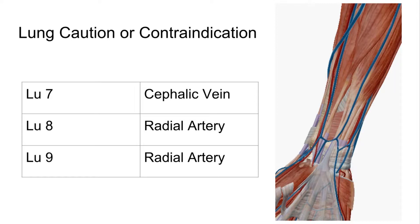On a multiple choice exam, look for the answer with Lung 7 for wind cold and that'll be correct. In terms of location, it's on your forearm, 1.5 cun proximal to LI5, between the tendons of brachioradialis and abductor pollicis longus. The caution here is the cephalic vein.